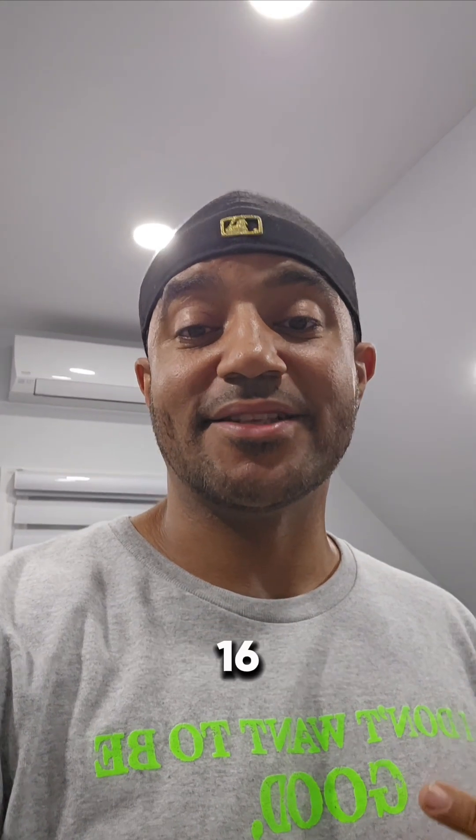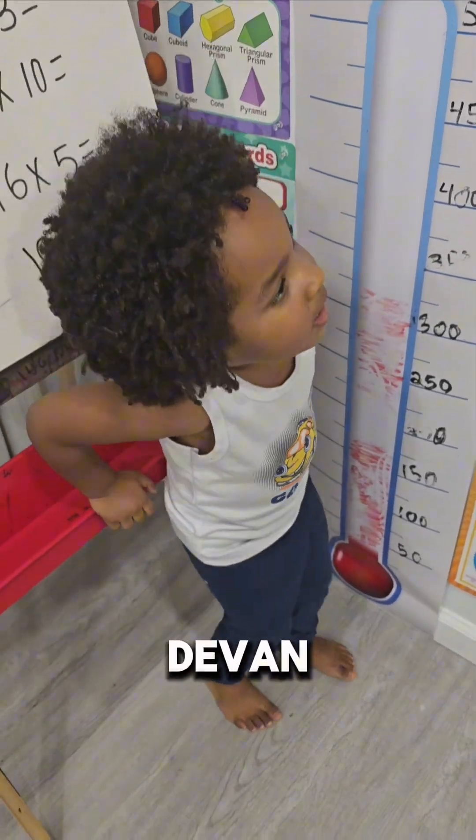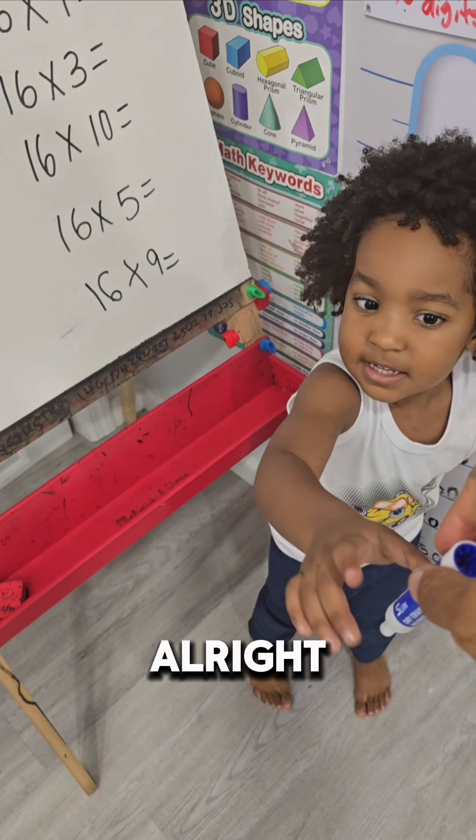My three-year-old toddler is going to show us how to calculate 16 times tables. Are you ready, Devin? I'm ready! All right!